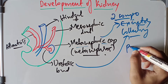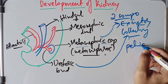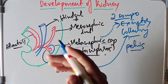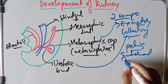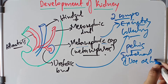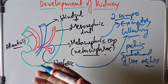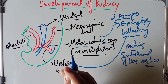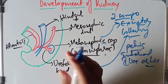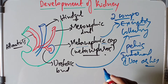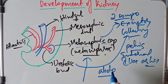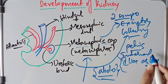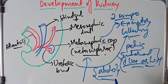Initially the kidney develops in the pelvis and is supplied by the internal iliac artery. Subsequently it ascends up to its adult position, gaining successively new arteries from the abdominal aorta. As the kidney ascends upwards and new arteries are formed, the older arteries degenerate successively.